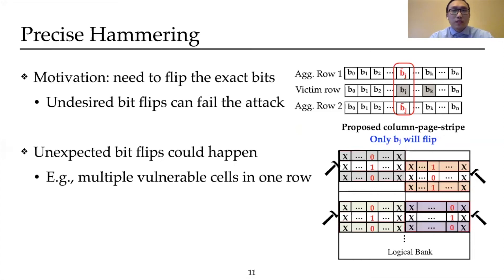Now the victim pages are successfully positioned, it is time to hammer them. We find that there is a need to flip the exact bits, as undesired bit flips can fail the attack. However, unexpected bit flips can happen — for instance, there might be multiple vulnerable cells in one in-row page. Fortunately, prior work shows that flipping of a specific cell only depends on the two cells in the same column of the aggressor rows. Therefore, it is possible to precisely control which bits flip. We propose the use of a column page stripe pattern to allow precise hammering, where the contents of the aggressor rows are set carefully so that only the intended column has the striping pattern known to induce bit flips, while the rest of the columns are set with the same content. In this way, DeepHammer can precisely control which bit to flip.